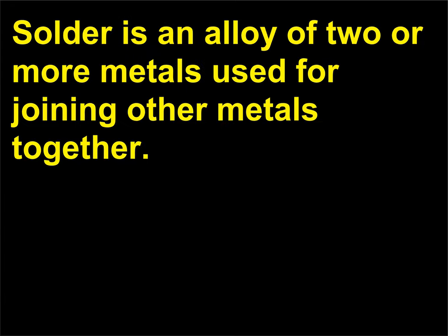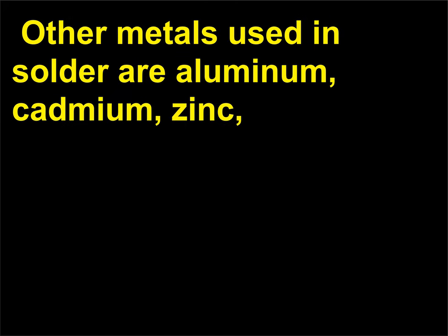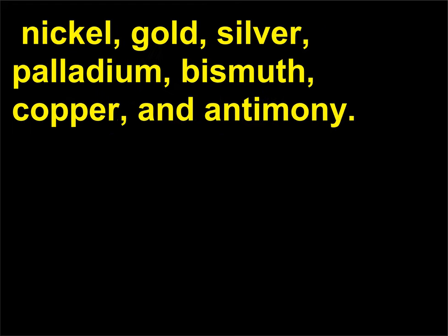What is solder? Solder is an alloy of two or more metals used for joining other metals together. One example of solder is half-and-half, composed of equal parts of lead and tin. Other metals used in solder are aluminum, cadmium, zinc, nickel, gold, silver, palladium, bismuth, copper, and antimony. Various melting points to suit the work are obtained by varying the proportions of the metals.